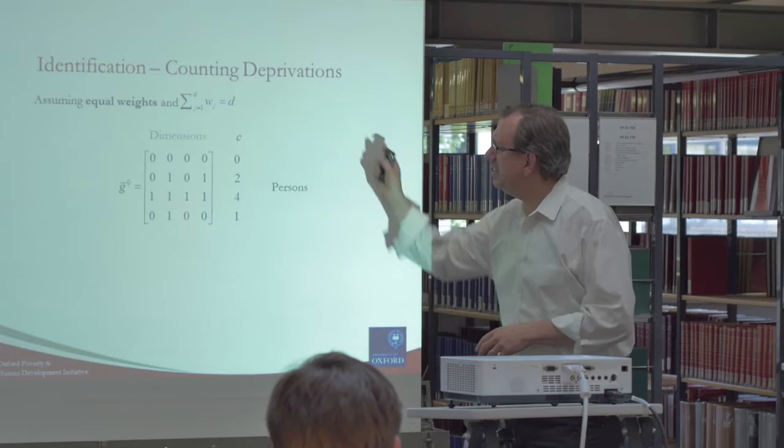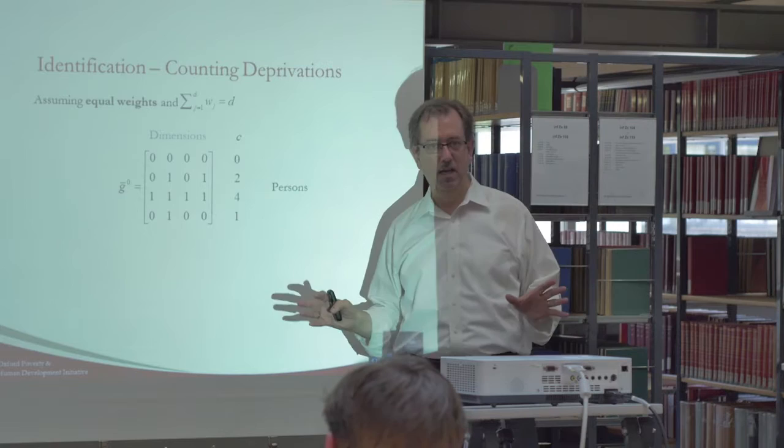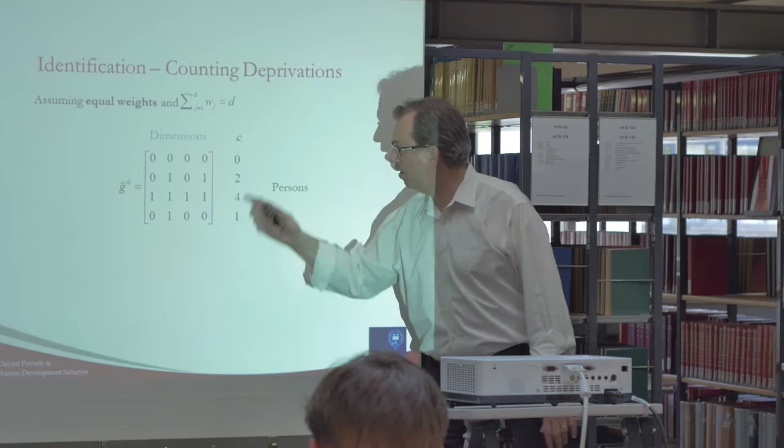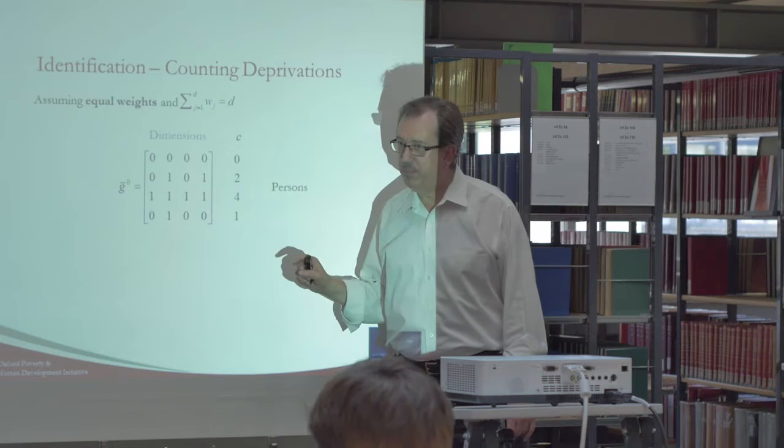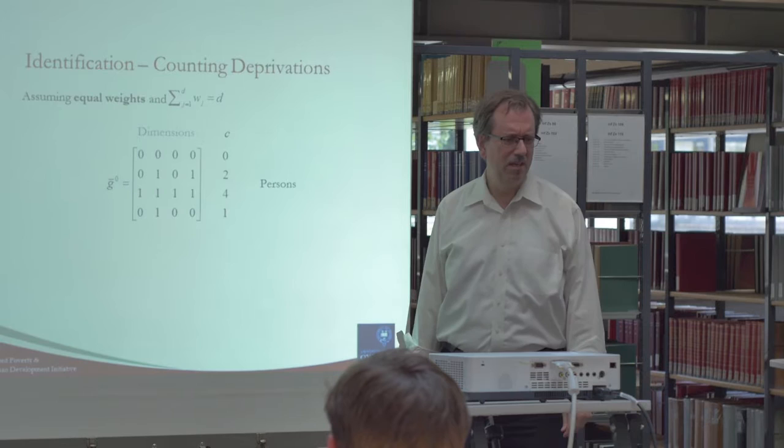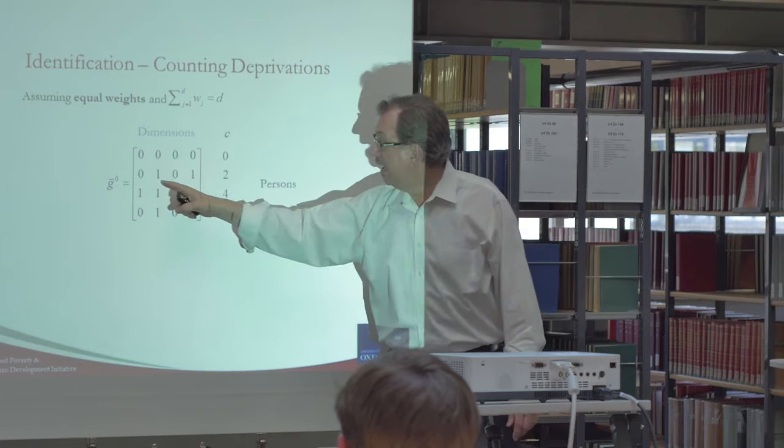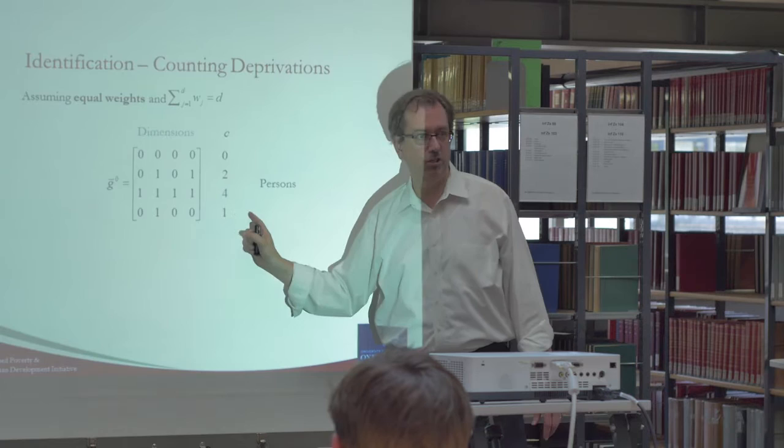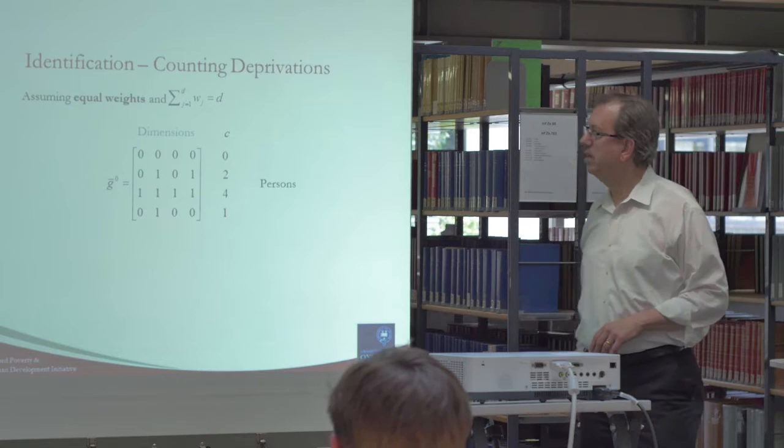Let's assume for the simple example that we have the equal weighted case. That's where you have one, one, one, one, or one fourth, one fourth, whichever way you look at it. Now, having this deprivation matrix, including weights, but now we're just having equal weights. How would we consider how deprived a person is? Well, add up. There's the counting approach. You're adding one, two, there's two deprivations. Four deprivations, one deprivation, none. So this column tells you the count of deprivations.